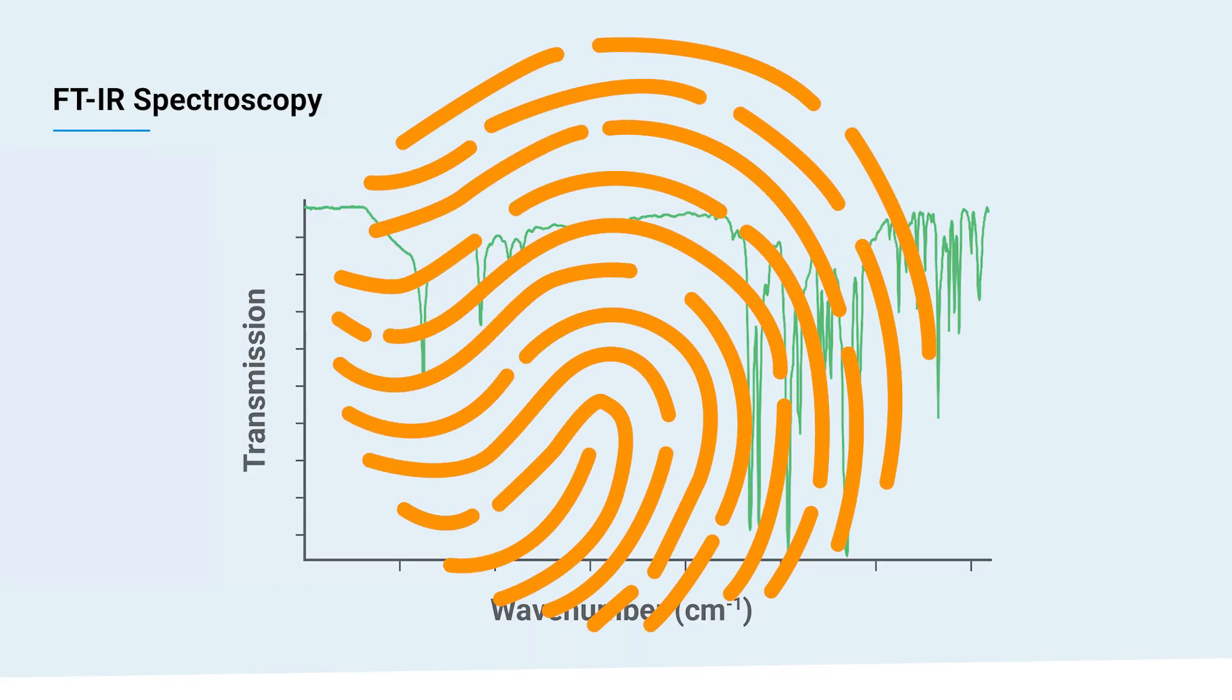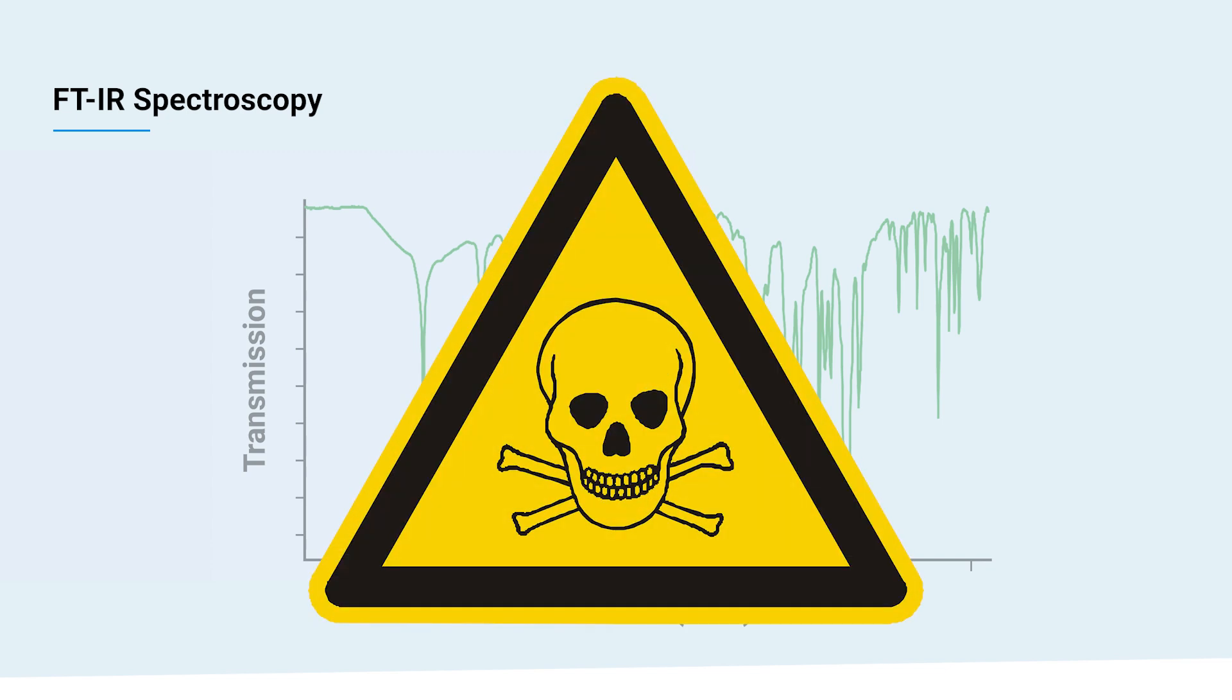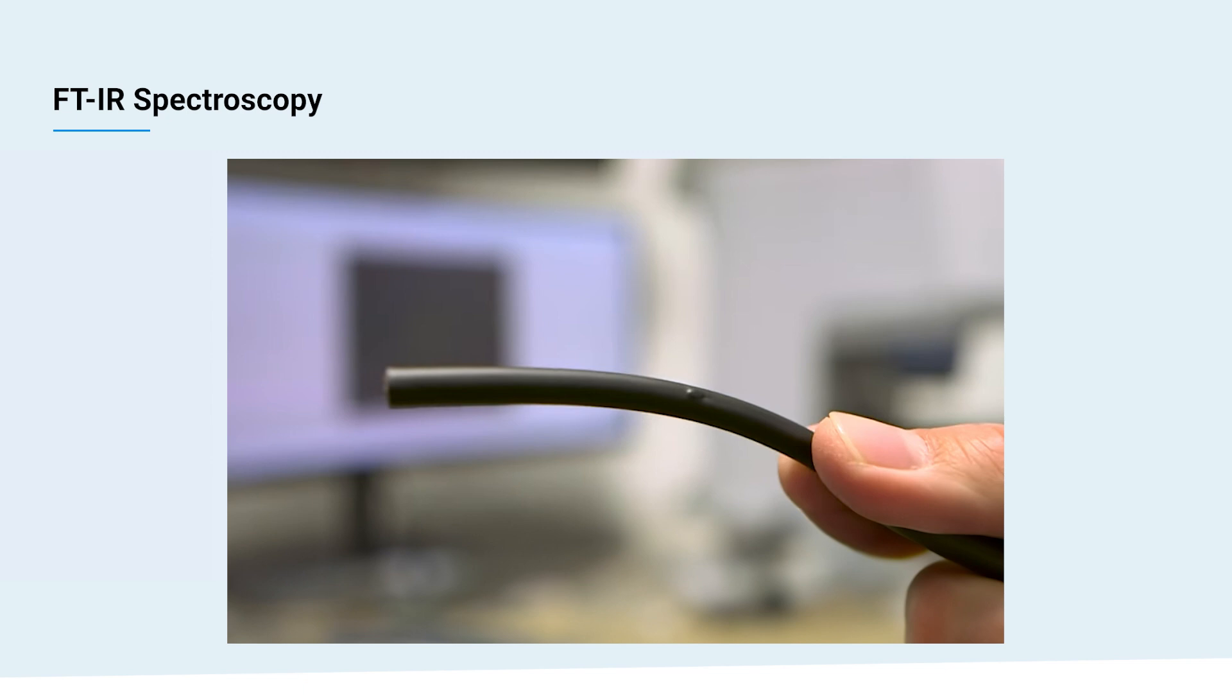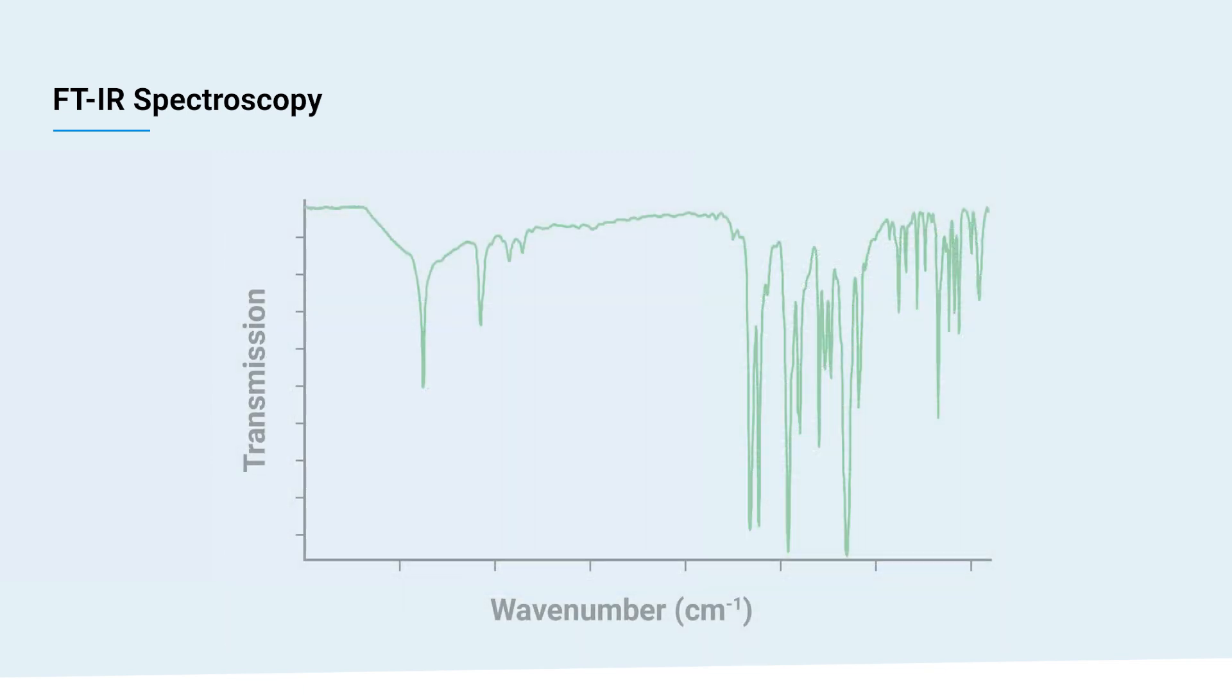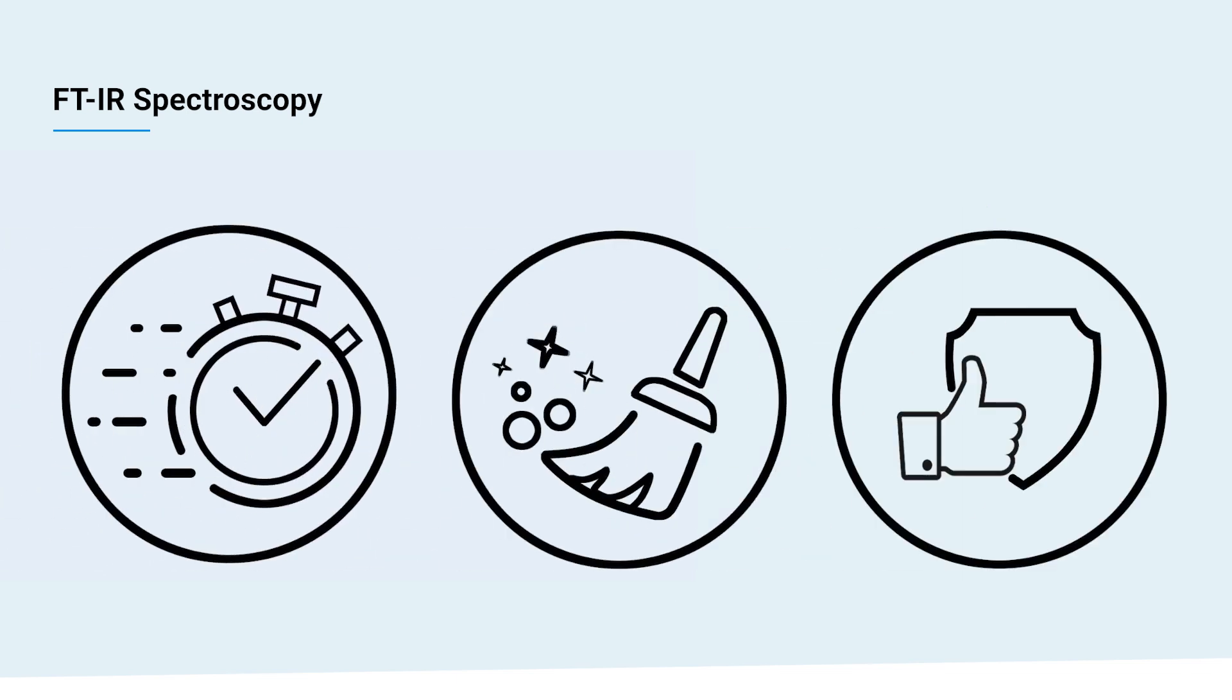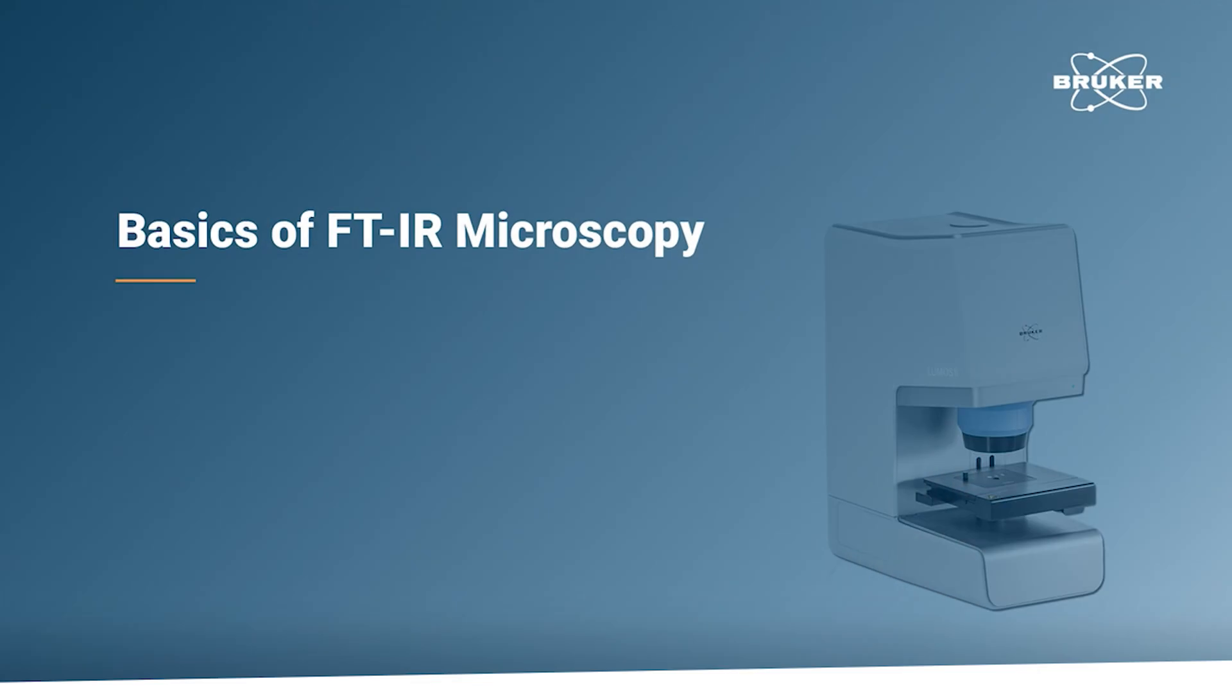Imagine an FTIR spectrum like a chemical fingerprint. It can be used to detect dangerous chemicals, characterize exciting new materials, identify unknown product defects, or verify known raw materials. Overall, it is specifically useful whenever quick, clean, and reliable chemical analysis is needed, even for microscopic samples. If you want to know more about IR microscopy, check out this next video.